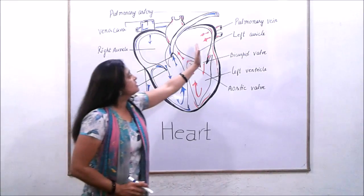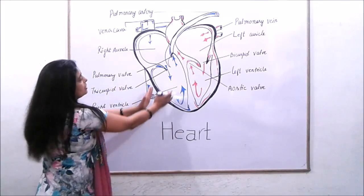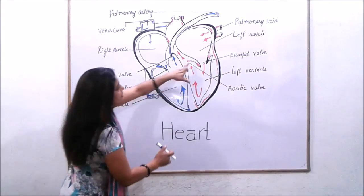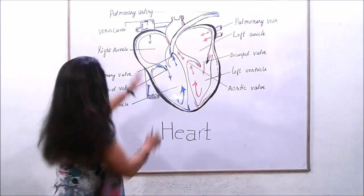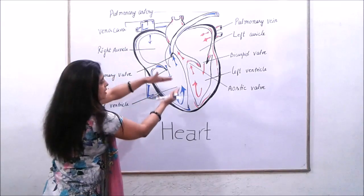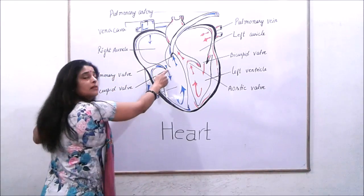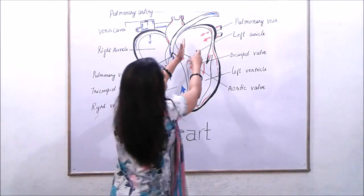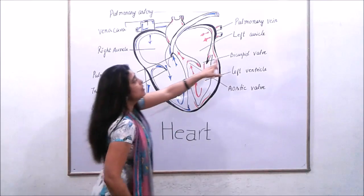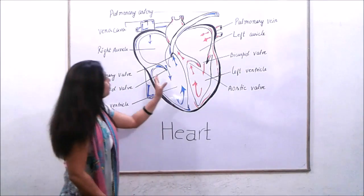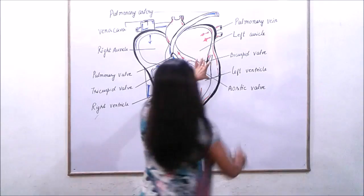These auricles are connected to the lower chambers known as ventricles. The lower chambers are the ventricles of the heart, and these are connected by walls. The right auricle is connected to the right ventricle by the tricuspid valve, and the left auricle is connected to the left ventricle through the bicuspid valve. These are the valves which connect auricles and ventricles.